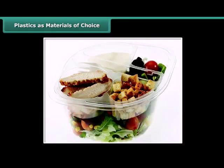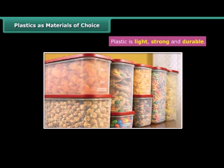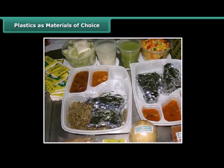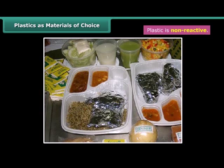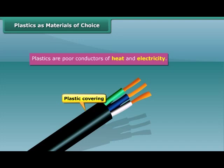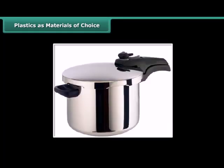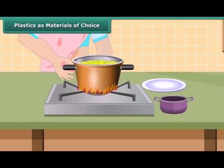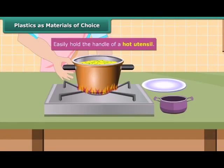Why are plastics so widely in use? Plastic containers are mostly used for the storage of food grains, pickles, salt and spices, since these are relatively non-reactive and impermeable to moisture. Since plastic is a poor conductor of electricity, electrical wires have plastic covering. Plastics being poor conductors of heat, we can easily hold the handle of a hot utensil.